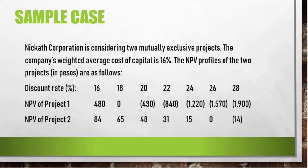Micat Corporation is considering two mutually exclusive projects. The company's weighted average cost of capital is 16%. The NPV profiles of the two projects, in pesos, are as follows. For each discount rate, we have the NPV profiles of project 1 and project 2. Let us arrive at the IRR and NPV of the two projects.